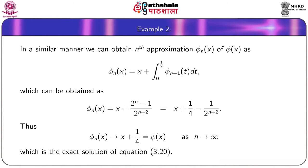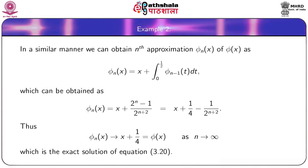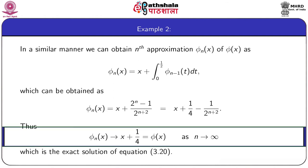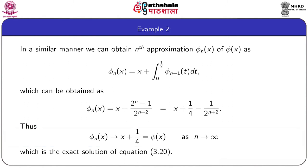The term 1/2^(n+2) tends to 0 as n tends to infinity, so the nth approximation φₙ(x) tends to x + 1/4. This gives the exact solution φ(x) = x + 1/4 of the given integral equation as n → ∞ by the method of successive approximations. Thus, by the method of successive approximations we have obtained the exact solution of this integral equation.